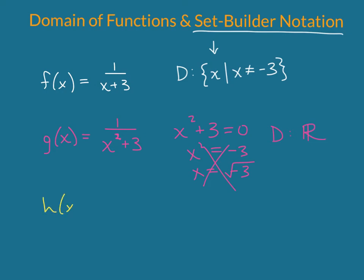How about h(x) is x minus 1 over x squared plus 2x minus 8. Since we have a quadratic in the denominator we have a potential 2 numbers that will make that 0. So let's go ahead and factor the denominator.